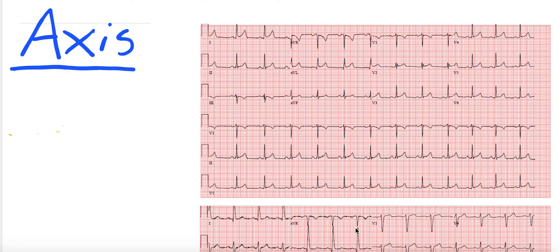Welcome back. This is the channel of the Whiteboard Doctor. Today we're going to be talking about axis. It's going to be a five-minute EKG video. These videos are meant to cover a 12-lead electrocardiogram topic in five minutes. We very rarely accomplish that — most of them are closer to seven minutes, but we'll go for it. For those coming back, welcome back. For those who are new, feel free to check out our other videos, ask questions, subscribe. All right, let's get started.